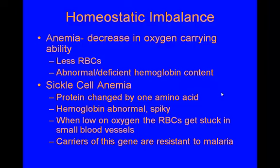Homeostatic imbalance: anemia is a decrease in oxygen-carrying ability. It could be due to not enough red blood cells, or abnormal or deficient hemoglobin content. One example is sickle cell anemia, a genetic disorder where the hemoglobin protein is changed by one amino acid, producing an abnormal hemoglobin that becomes spiky. When low on oxygen, the red blood cells become spiky-shaped and get stuck in small blood vessels, which can be excruciatingly painful. Carriers of the gene are resistant to malaria. We can treat sickle cell anemia, and treatment has improved significantly.